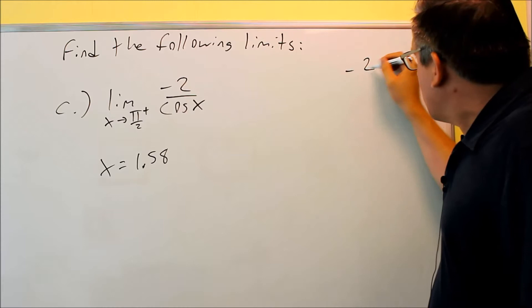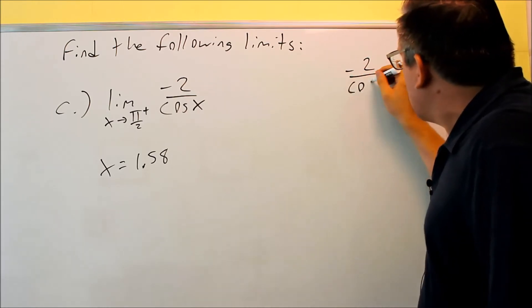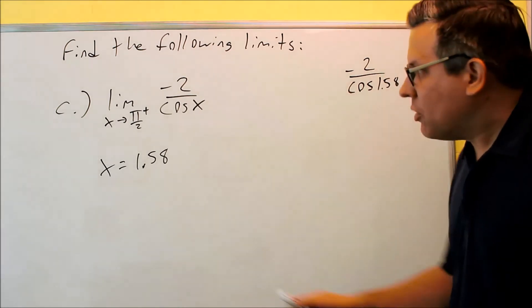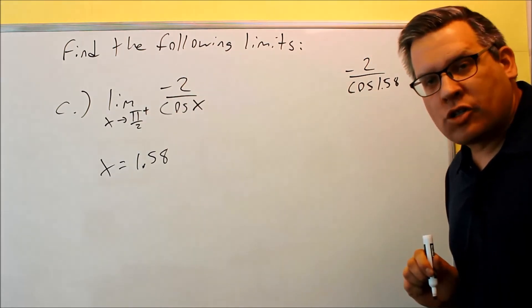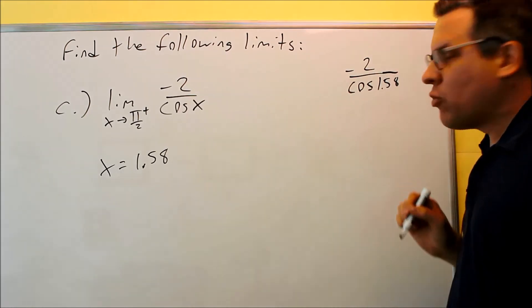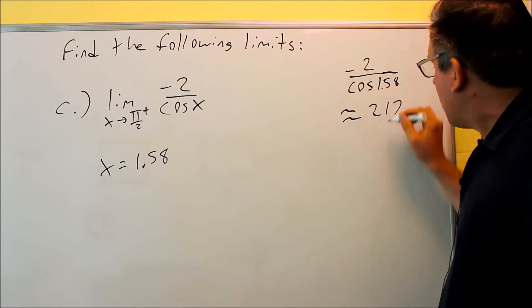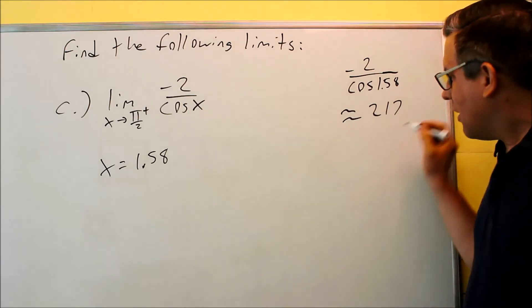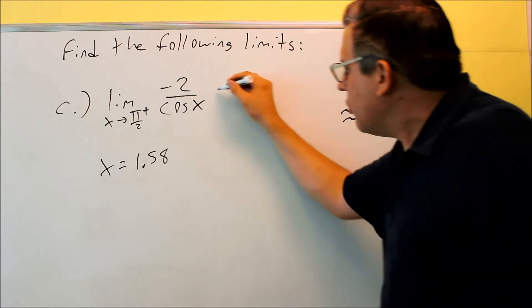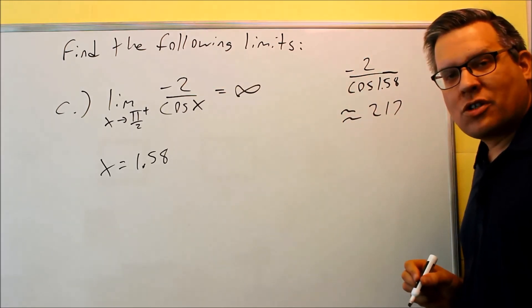Scratch work: −2 / cos(1.58). Make sure your calculator is in radian mode, because π/2 is a radian measurement. We're going to do −2 over cosine(1.58), and if I put that into my calculator, I get approximately 217 — a large positive number. So we can conclude that for this problem, the limit is going to approach positive infinity.